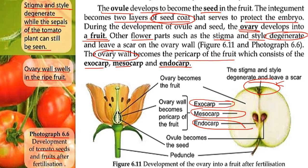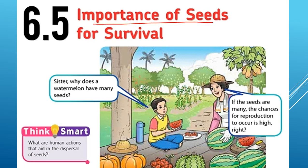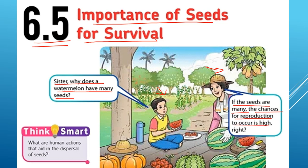Now subtopic 6.5: Importance of Seeds for Survival. In this diagram, a younger sibling asks why a watermelon has many seeds. The older sister explains: if the seeds are many, the chances of reproduction occurring are high.